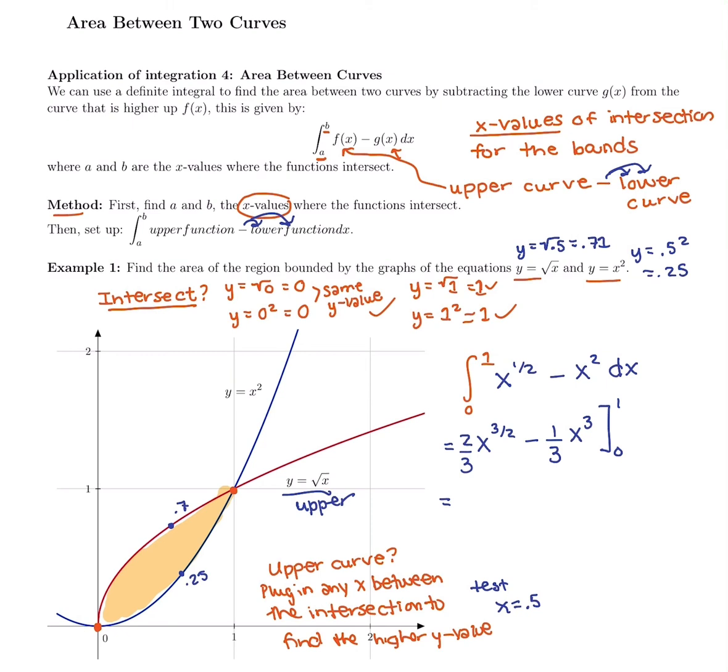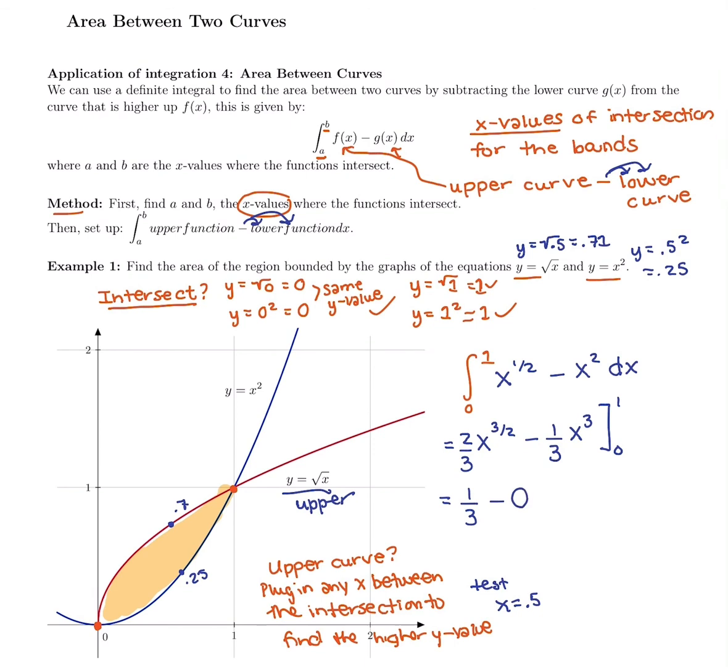Plugging in 1, I'm going to do 2/3 times 1 to the 3/2 minus 1/3 times 1 to the 3, and I get 1/3. Minus, when we plug in 0 to both of these terms, we get 0. So my answer is 1/3 for the area between these two curves, which is about 0.3 repeating.